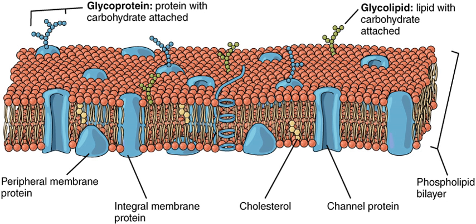Different types of biological membranes have diverse lipid and protein compositions. The content of membranes defines their physical and biological properties. Some components of membranes play a key role in medicine, such as the efflux pumps that pump drugs out of a cell.